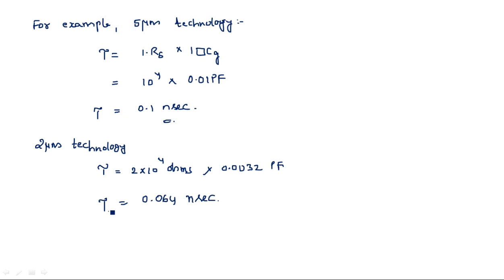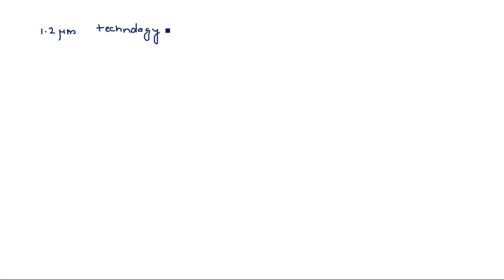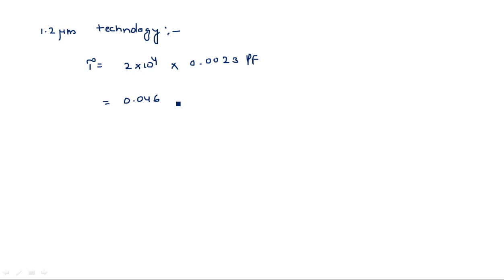For 1.2 micrometer technology — where technology refers to the length of the channel — tau equals 2 × 10^4 into a capacitance value of 0.0023 picofarads, giving 0.046 nanoseconds. Likewise, we can calculate the time delay at different technologies. For N-type diffusion these values apply; for P-type diffusion the corresponding resistance and capacitance values should be substituted.